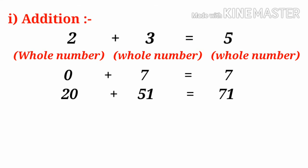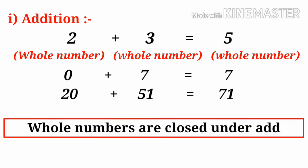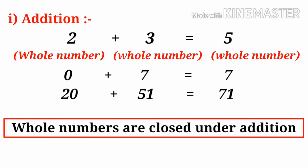All these are Whole Numbers. We know that the sum of any two Whole Numbers is always a Whole Number. So, we can say that Whole Numbers are closed under Addition.